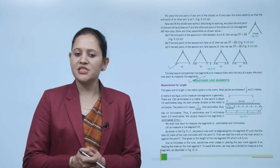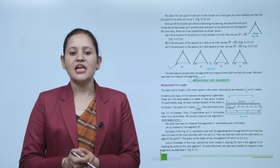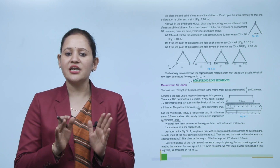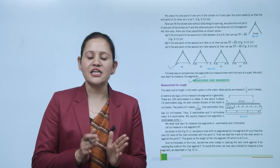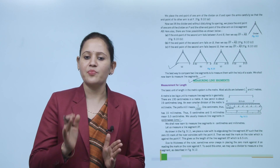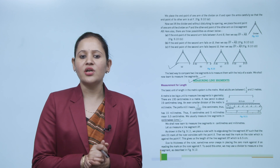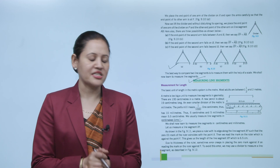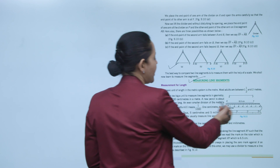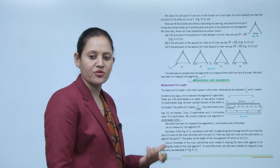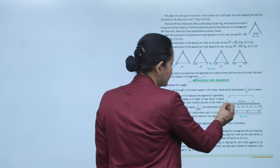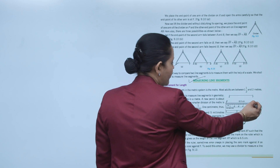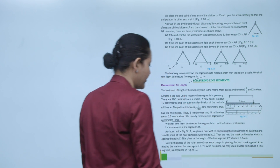We shall now learn to measure a line segment in centimeters and millimeters. To measure line segment XY as shown in figure 9.11, we place the ruler with its edge along XY such that the zero mark coincides with point X. Then we read the mark on the ruler against point Y. This gives us the length of XY, which is 6.5 centimeters.